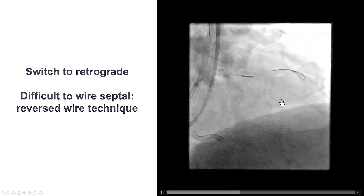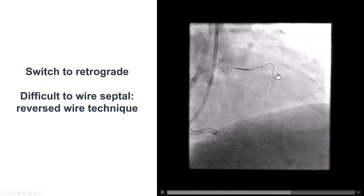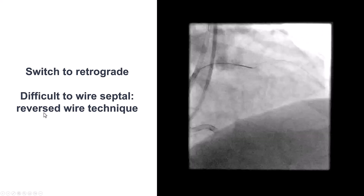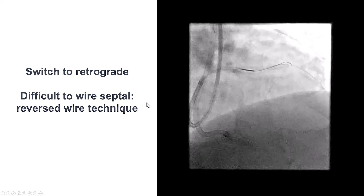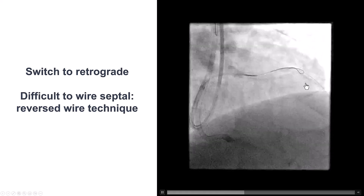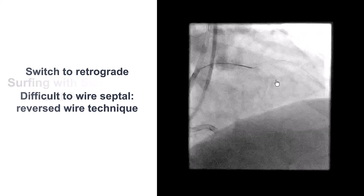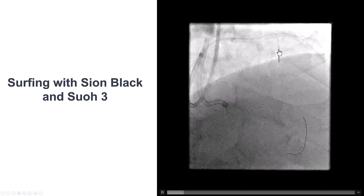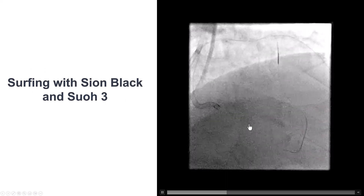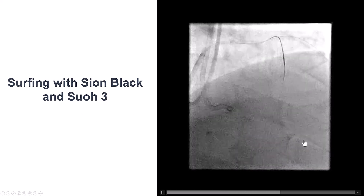We had a lot of difficulty getting into the septal collateral, which had a retroflex origin. This was solved by using the reverse wire technique — advancing a polymer-jacketed wire bent about 3 cm from the tip, then pulling it back so it hooks up the septal. We then inserted our microcatheter and did surfing with a Sion Black and SUO3 guidewires, but had a lot of difficulty getting through that septal.